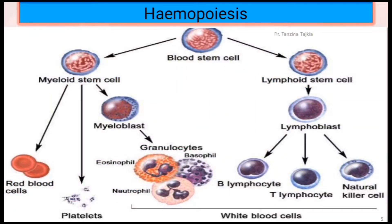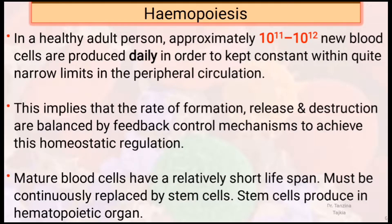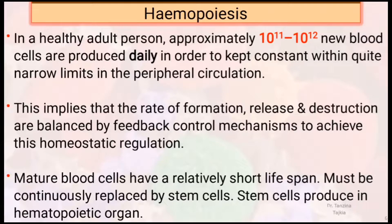This figure shows the different types of blood cells that are produced. In a healthy adult person, approximately 10 to the power 11 to 10 to the power 12 new blood cells are produced daily, in order to keep the count constant within quite narrow limits in the peripheral circulation. This implies that the rate of formation, release, and destruction are balanced by a feedback control mechanism to achieve this homeostatic regulation.